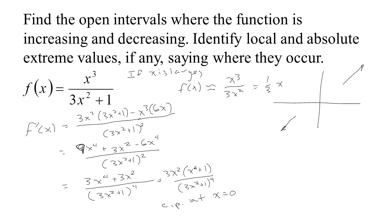Something important to notice: except at x equals 0, the derivative is always positive, because the denominator is guaranteed positive and the numerator is a positive times another positive. So the function is always increasing — it just has a level spot at x equals 0, where g(0) equals 0. The function is increasing before and after that point, so there are no absolute extrema and no local extrema.